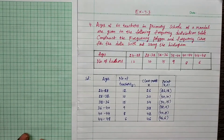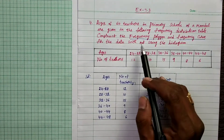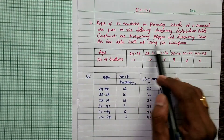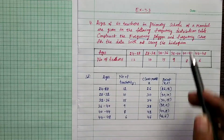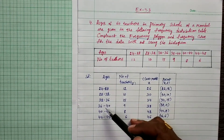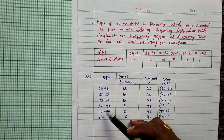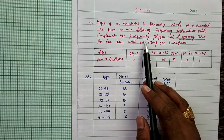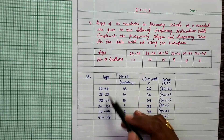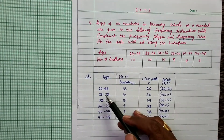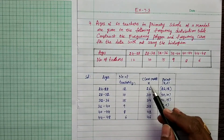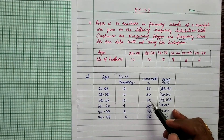By using histogram we need class intervals also. But to construct only the frequency polygon and frequency curve, there is no need to take the class intervals in the graph. Just taking the class marks is enough.